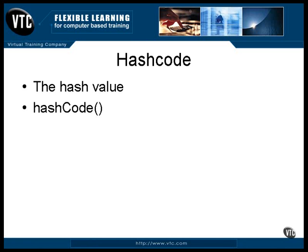You could, for example, create a class that contains a character string. If you were to use the characters in that string to create the hash value, then by comparison of the hash values, you could determine with a level of certainty whether they contained the same string. The default hashCode method usually just returns the value of the address of the object as the hash code value, so the only comparison that will match is to compare an object to itself.